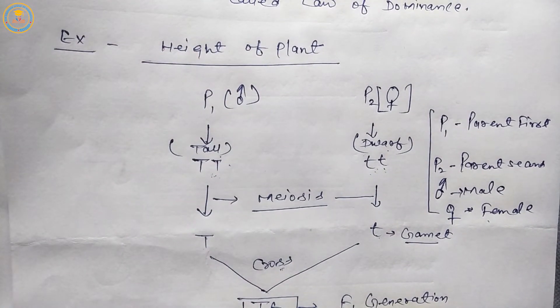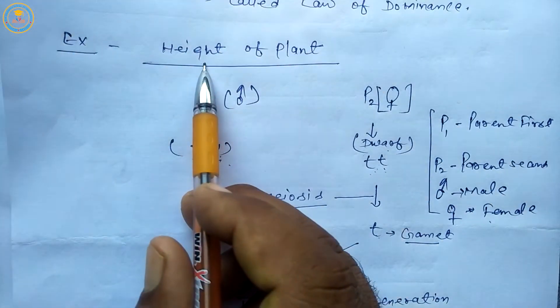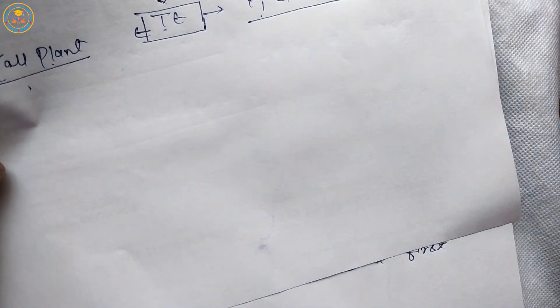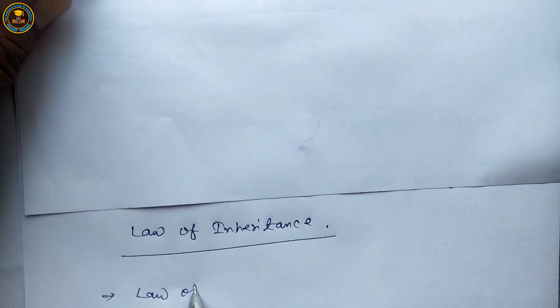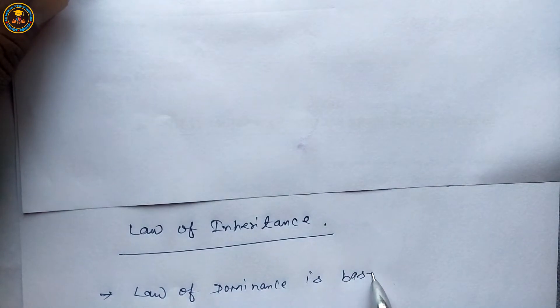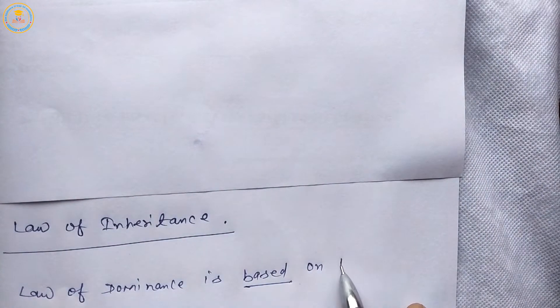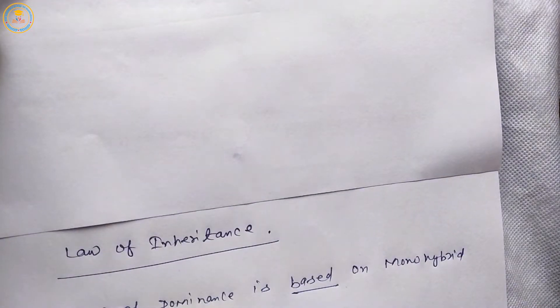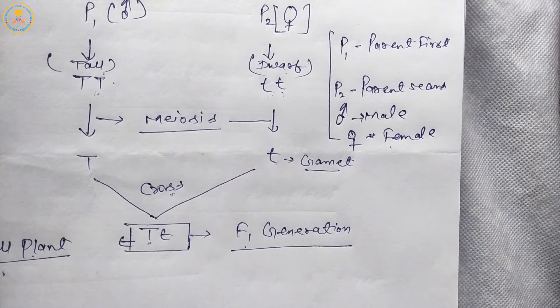Students remember, in this law we take only a single trait or single character. So the first law — law of dominance — is based on monohybrid cross. This is the first law of Mendel's inheritance.